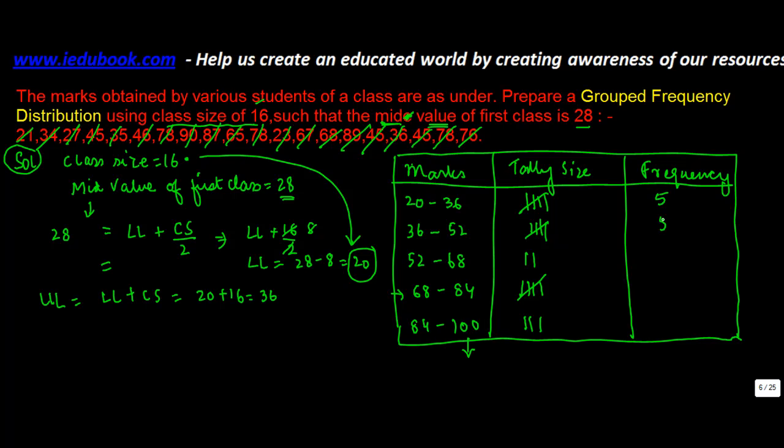So the frequency becomes 5, 5, 1, 2, 2, 2, 5, 3, totaling 20.